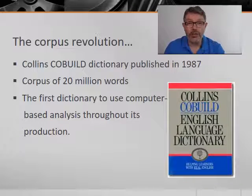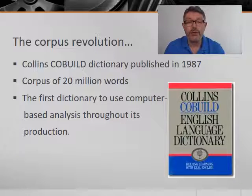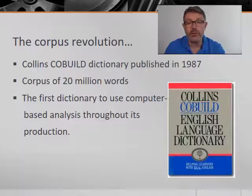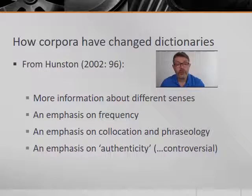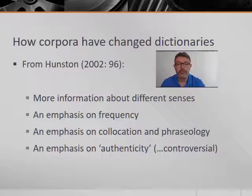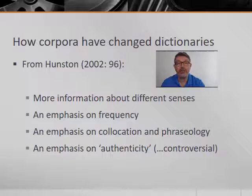This is the dictionary that changed everything. Published in 1987, the Collins COBUILD Dictionary used what is now considered to be quite a small corpus — only 20 million words — to inform its selection of words and senses. After COBUILD, dictionaries were never the same again. Susan Hunston, in her 2002 book Corpora in Applied Linguistics, notes that corpora allow today's lexicographers to do things that were not possible in the earlier part of the 20th century, even for those heroic people in James Murray's scriptorium.